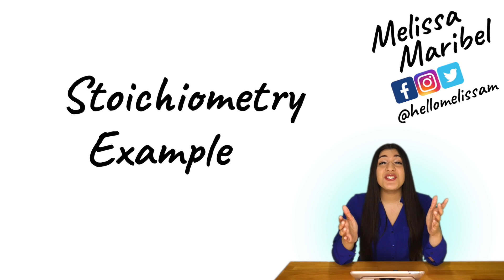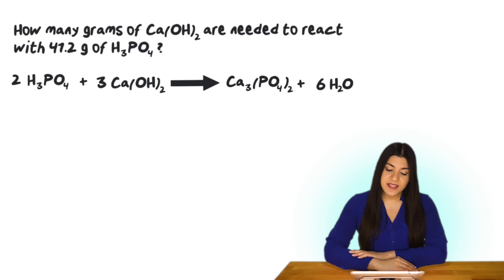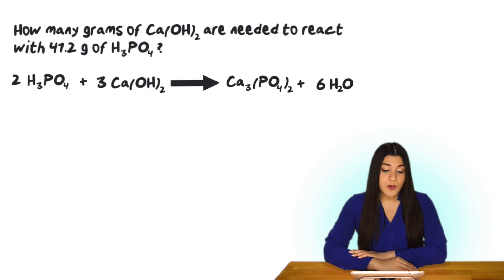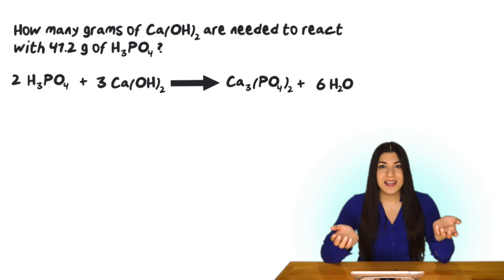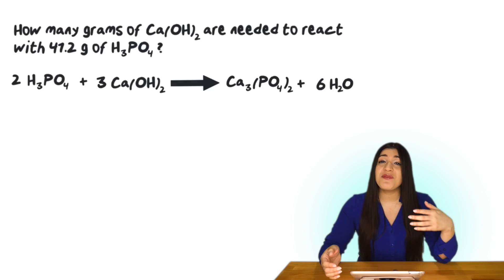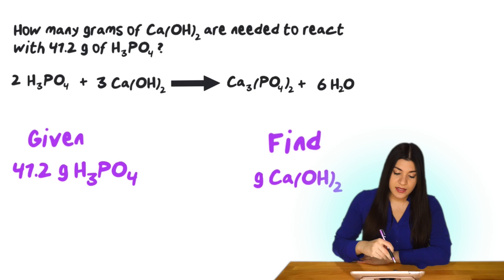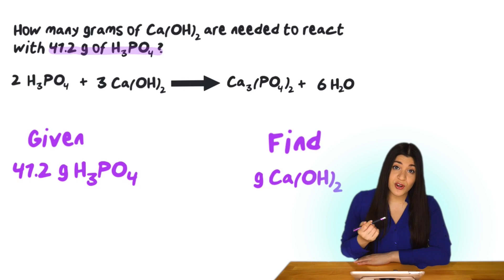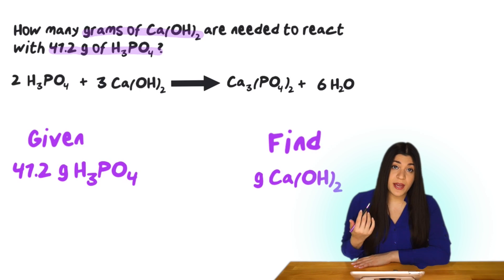Let's jump right into our stoichiometry problem. The problem states: how many grams of calcium hydroxide are needed to react with 41.2 grams of phosphoric acid? They give us our balanced equation. So let's identify what we're given and what we're finding. Our given is 41.2 grams of phosphoric acid, and what we're finding is how many grams of calcium hydroxide.